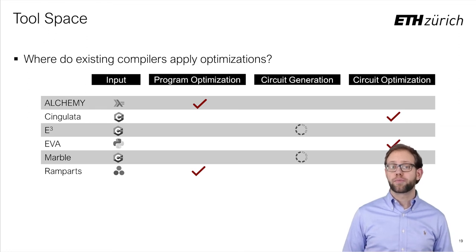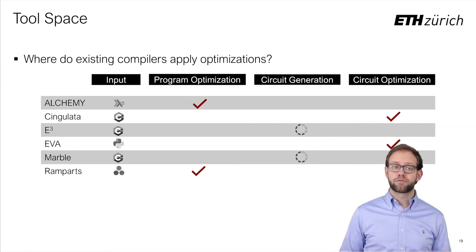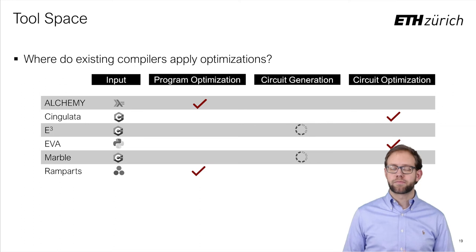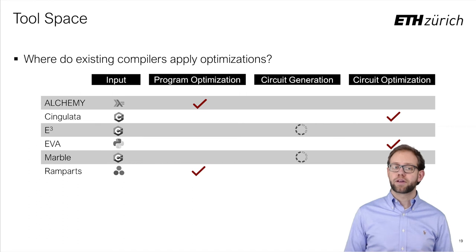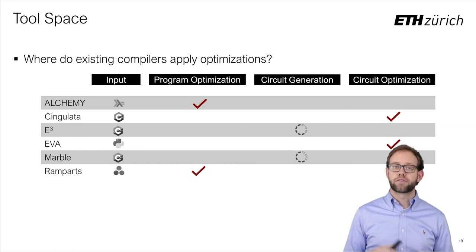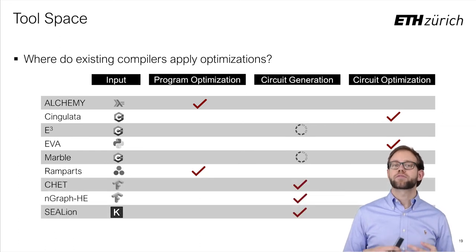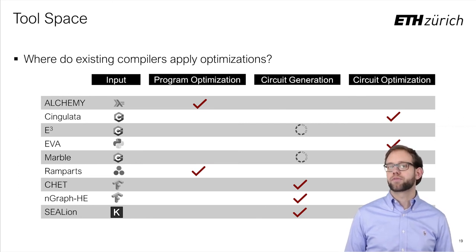We can see that while optimizations in general-purpose FHE compilers cover all stages of compilation, each individual tool tends to focus on one specific optimization. Some focus on rewriting the input program using static analysis and then translate the resulting program into a circuit fairly directly. Others take the input program as-is, directly convert it into a circuit, and then start optimizing that circuit. Meanwhile, some substitute in handwritten efficient circuits for binary adders and multipliers rather than generating naive ones and then optimizing the entire circuit. This is also done by machine learning-focused compilers, which take this concept significantly further, since they can provide custom circuit designs for all possible operations their more limited input languages allow.